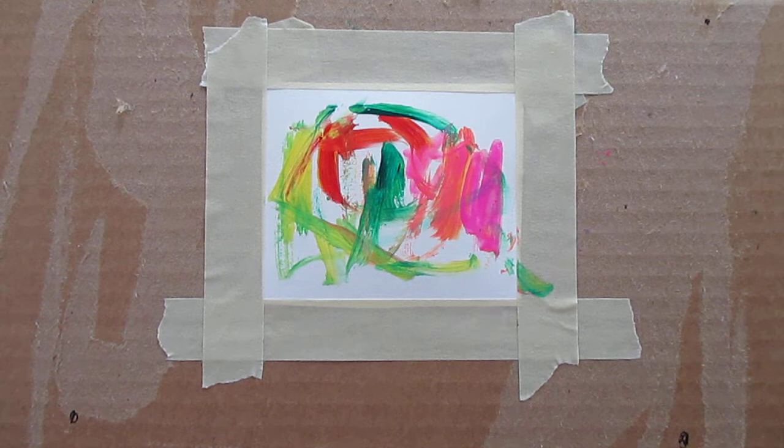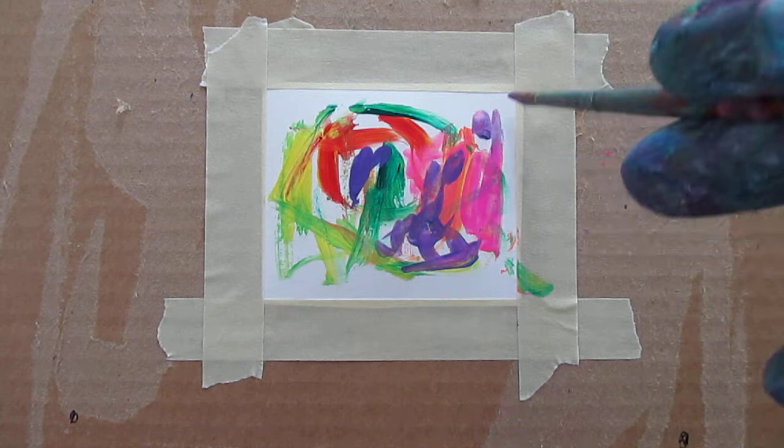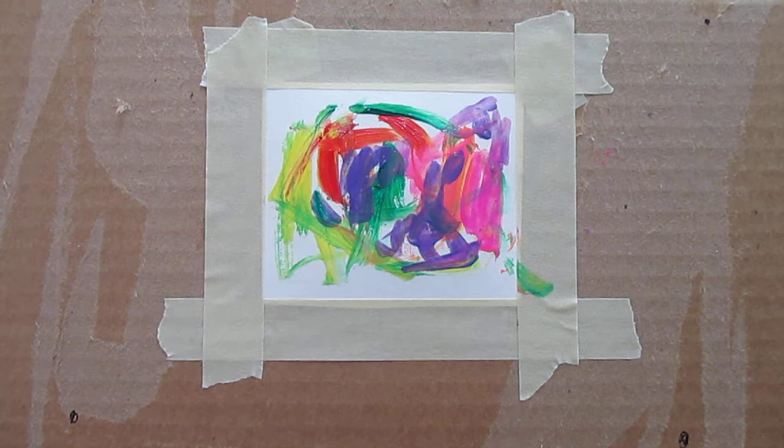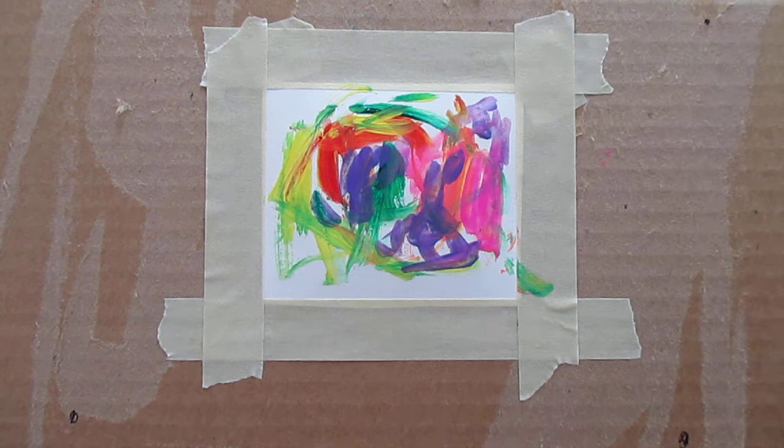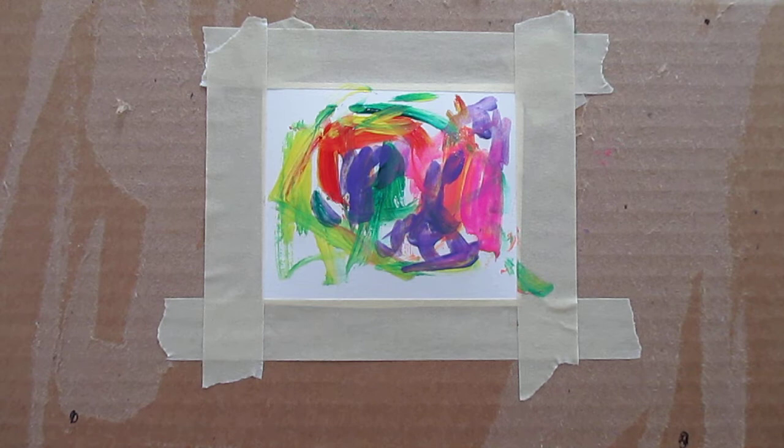Because I like what we call non-objective art, pure art, whatever you want to call it. This kind of art is artwork that you either like or you don't because of the way it looks. You don't like it because it's a horse, or do like it because it's a horse. You're only going by how it's put together.